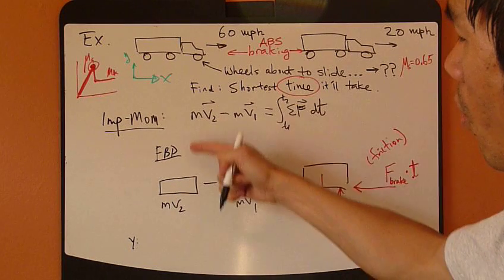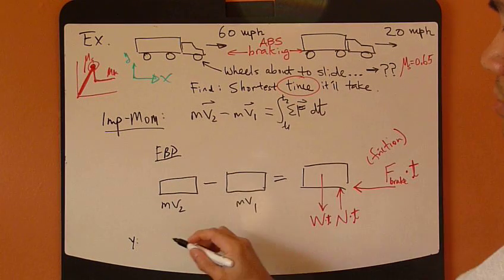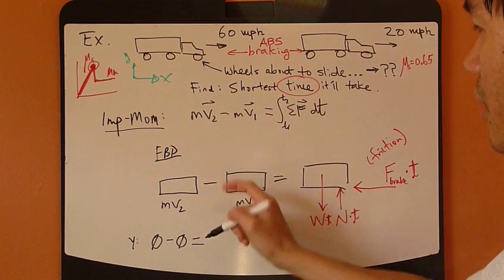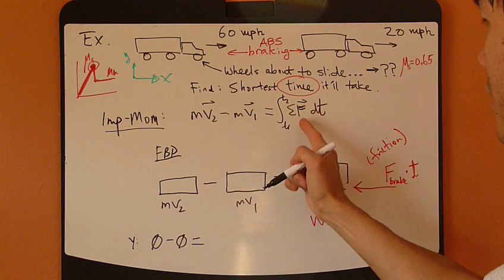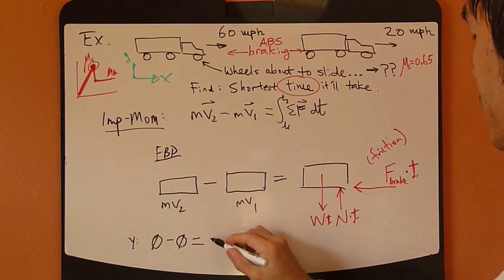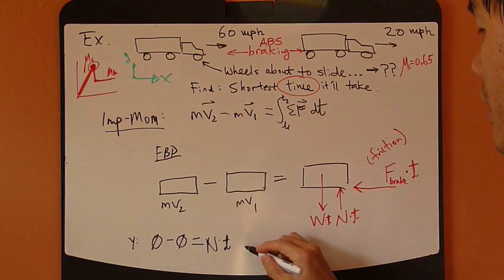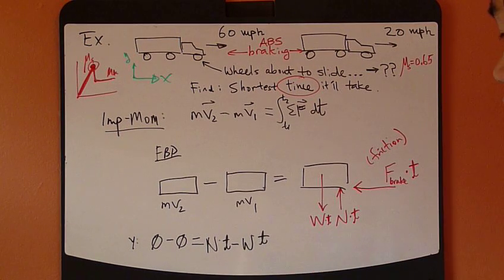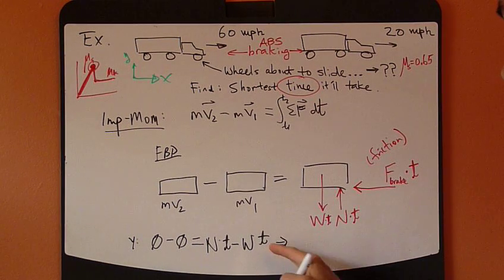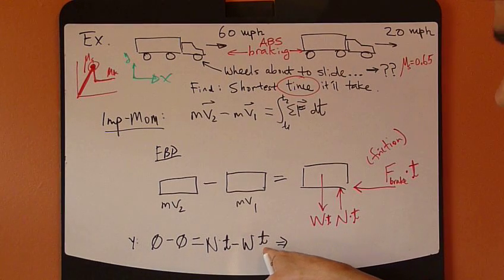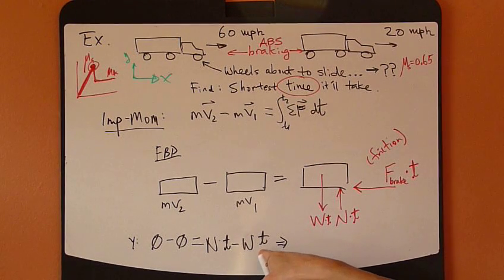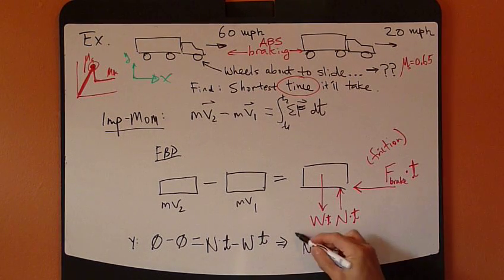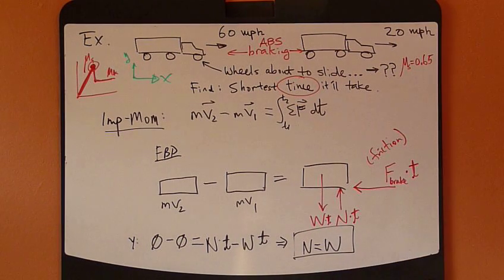Since there's no Y direction of momentum or velocity, 0 minus 0 equals right-hand side, so the sum of all the impulses, which is N times T positive going up minus weight times T. Therefore 0, and then take T out of it, it cancels out. So N equals W. Simple as that. Normal force equals weight.